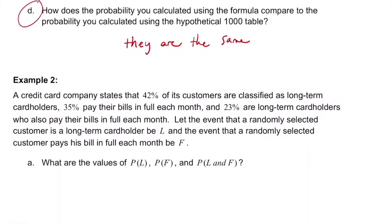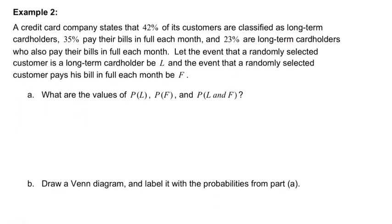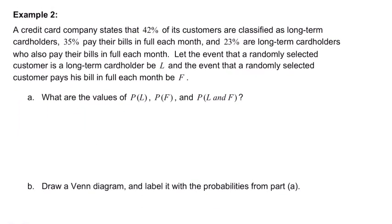Let's go down to example two. A credit card company states that 42% of its customers are classified as long-term. So 42% long-term. 35% pay their bills in full each month. And 23% are long-term cardholders who also pay their bills in full each month. Let the event that a randomly selected customer is a long-term cardholder be L. And the event that a randomly selected customer pays his bill in full F. So L is long-term. F pays in full. What are the probabilities of L, F, and L and F?